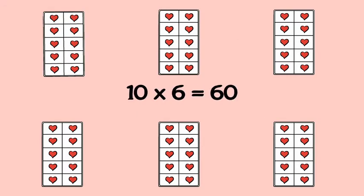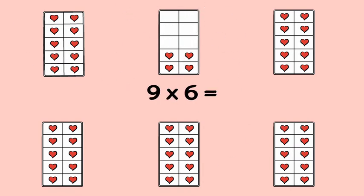Try 9 × 6. 10 × 6 is 60. Take away one group of 6. So 9 × 6 is 54.